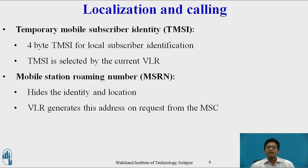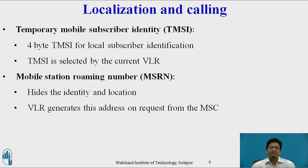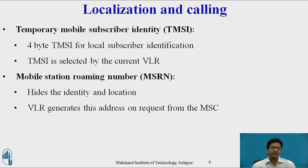Temporary Mobile Subscriber Identity (TMSI): TMSI hides the IMSI, where GSM uses a 4-byte TMSI for local subscriber identification. TMSI is selected by the current VLR. It is a temporary address valid within the location area of the VLR. TMSI is stored in the VLR and is not passed to the HLR.